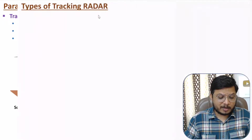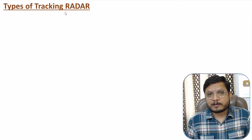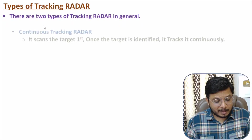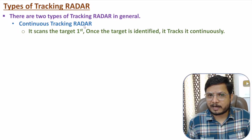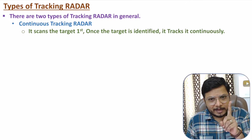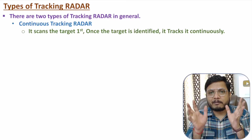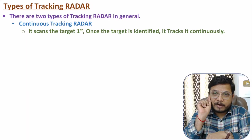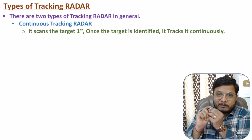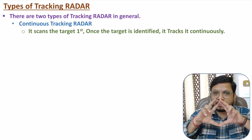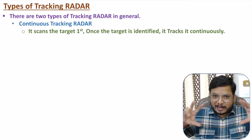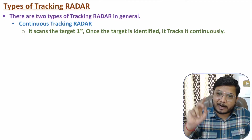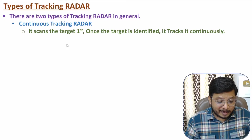Now let us talk about the different types of tracking radar. In general, there are two types. The first is continuous tracking radar system. In a continuous tracking radar system, there is one antenna. It scans the area first, and during scanning, if it identifies a target, that radar system will track it continuously. So it scans, and if a target is identified, the antenna focuses towards that target continuously.